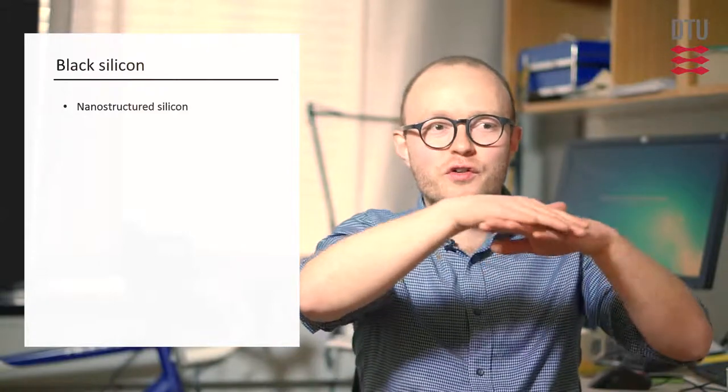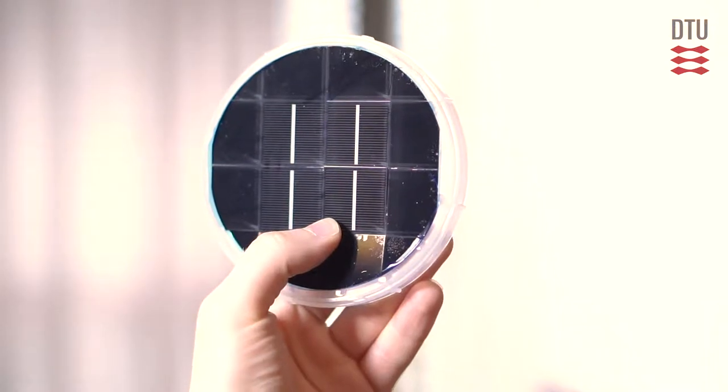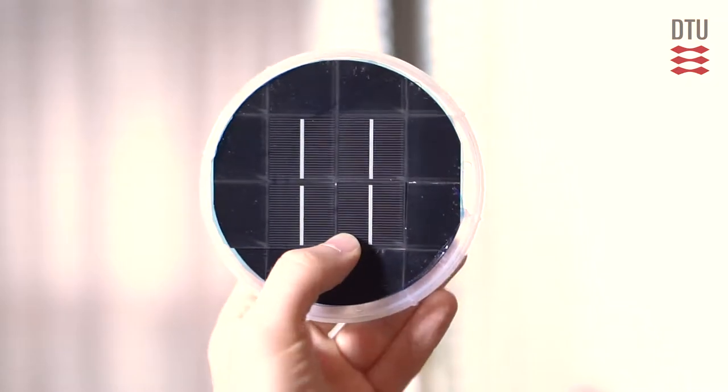My work is primarily focused around black silicon, which is basically defined as nanostructured silicon or a nanostructured silicon surface that becomes extremely black and anti-reflective because of the nanostructures. I've worked with this technology since my bachelor project back in 2010, where we mostly looked at the material properties and produced some quite poor solar cells just to demonstrate that it was possible to make the nanostructures and complete the cell fabrication and measure an efficiency.